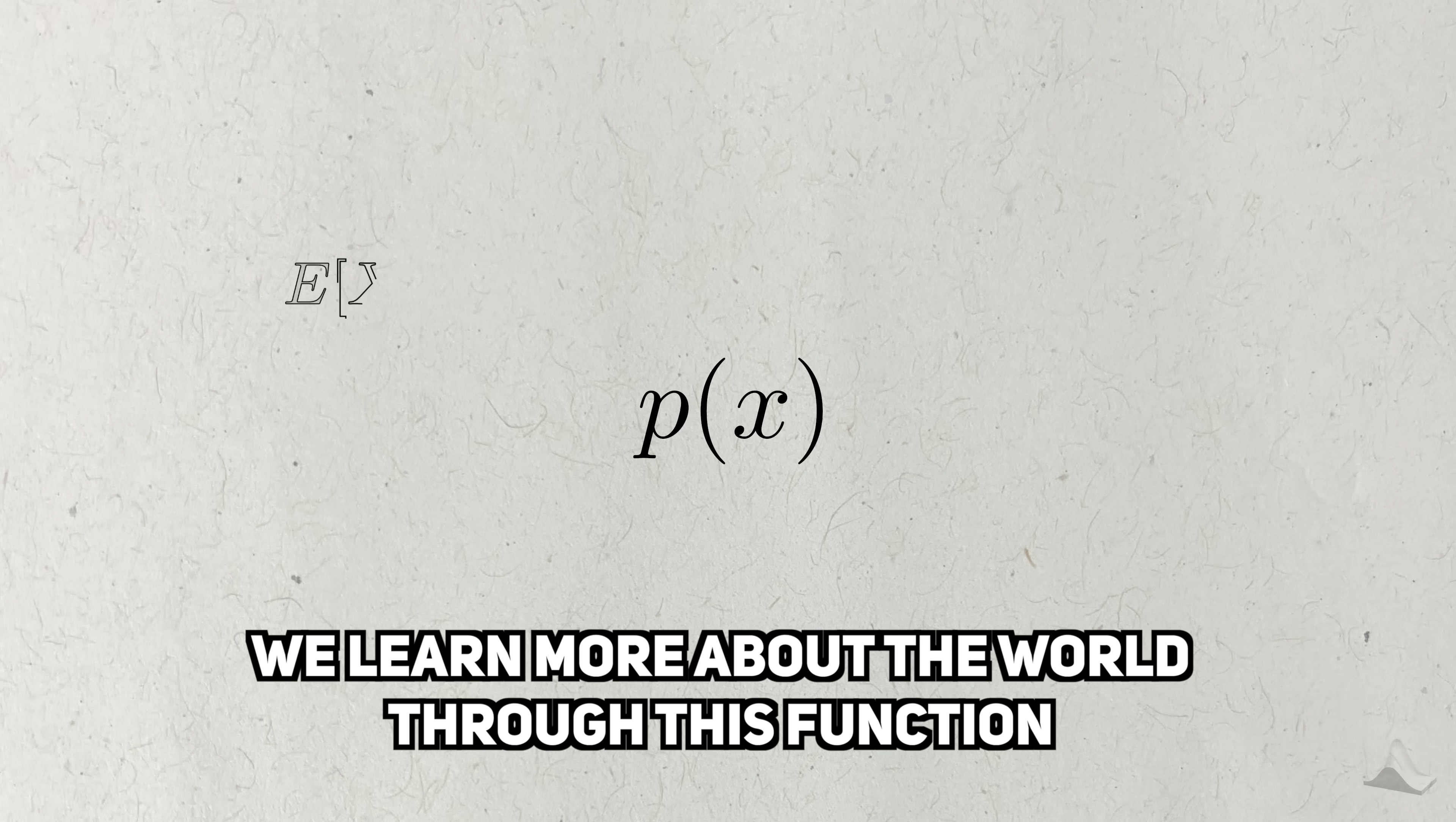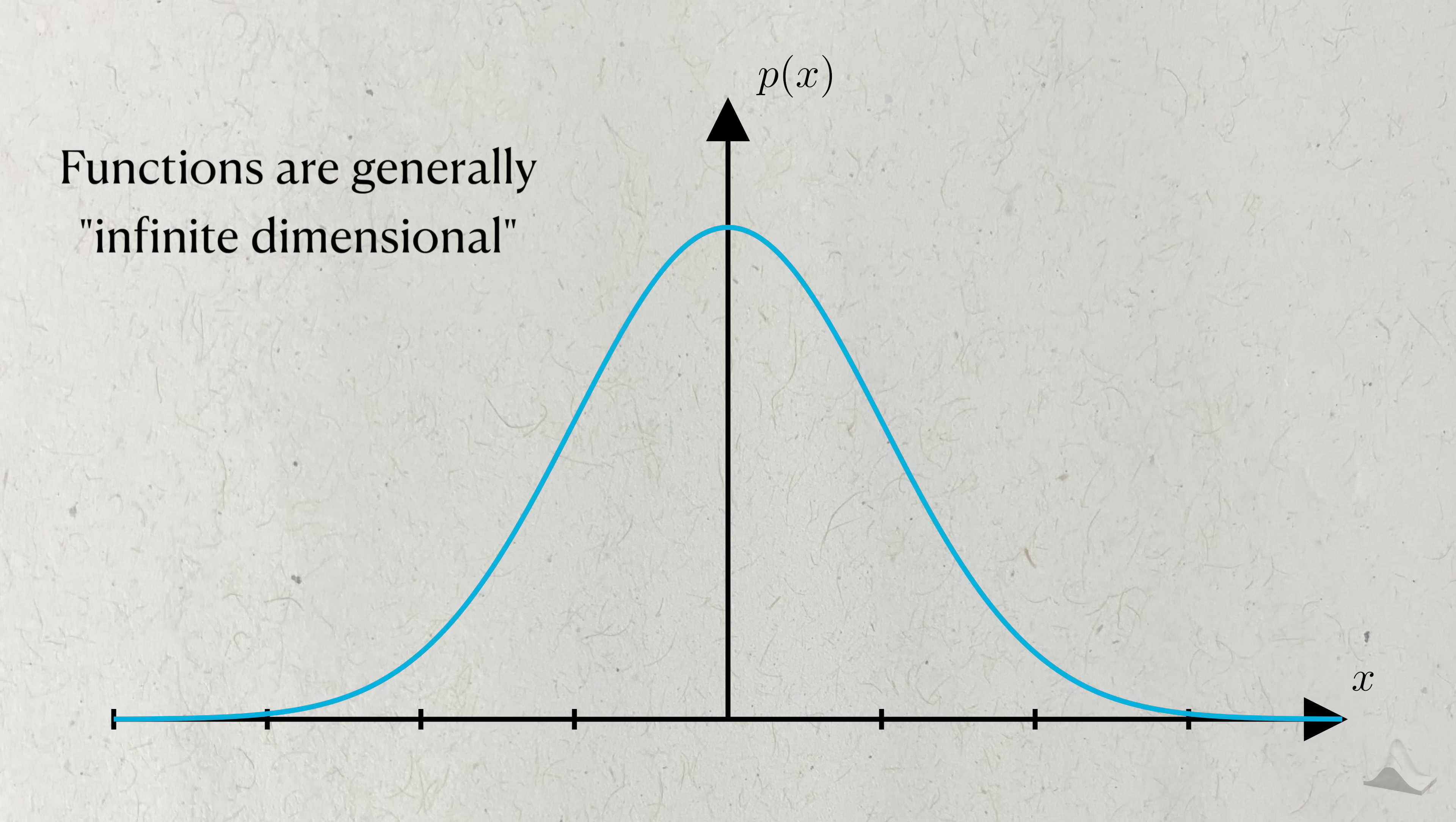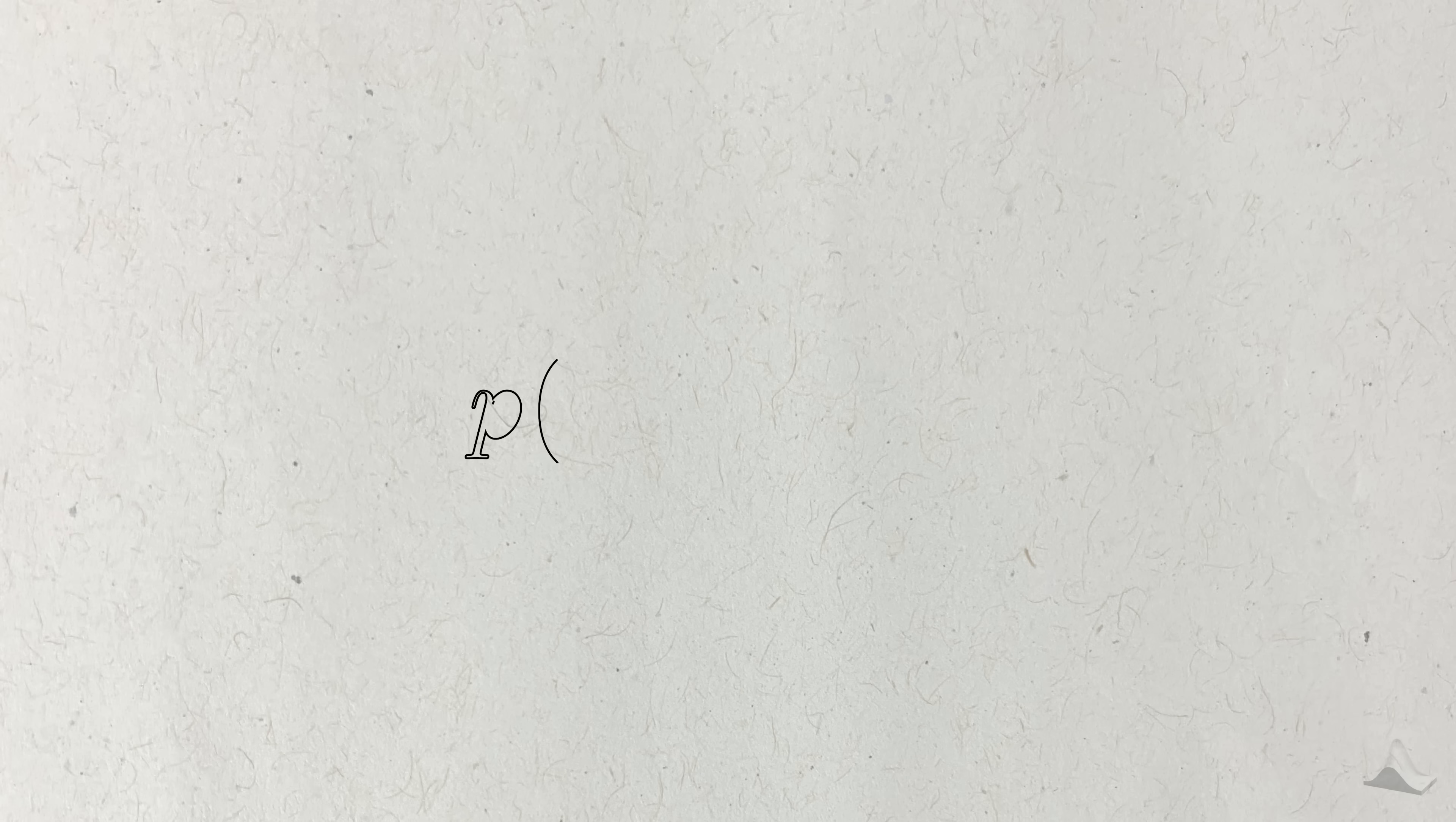We want to learn more about this PDF because it can tell us about important qualities about the possible values. For example, we can calculate an average or typical value, or we could learn about the range and spread of what values are possible. What gets in the way is that PDFs are hard to estimate. Functions are generally infinite-dimensional, and no one is paid enough to estimate infinitely many things.